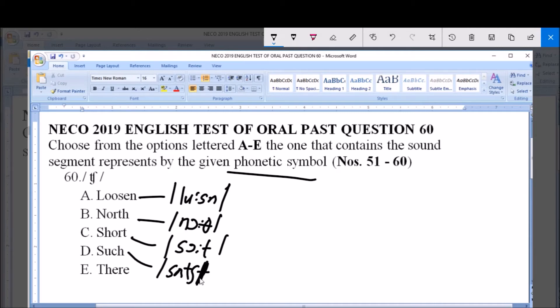Option E is pronounced as 'there'. Therefore, by this transcription, option D is correct because it is option D that has the consonant sound as in the given phonetic symbol.